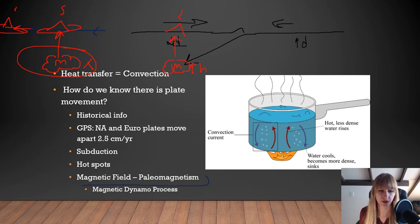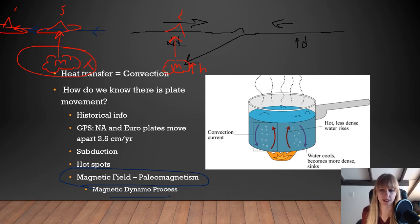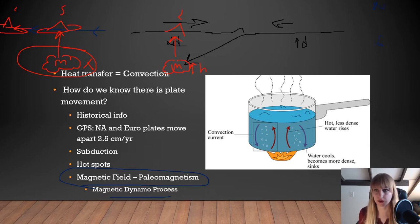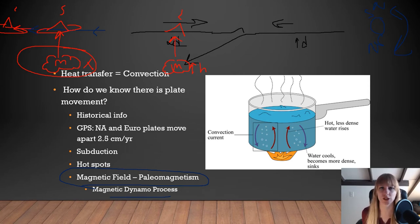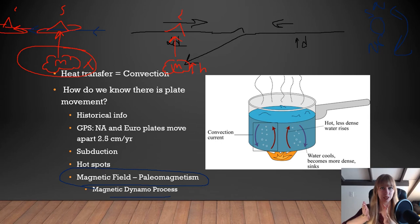The fifth line of evidence is paleomagnetism and the magnetic dynamo process. Magnetic north and south switch every few hundred thousand to millions of years, going from regular north/south to reversed polarity. We can see this in old layers of magmatic rock — as lava cooled, magnetic material aligned itself with north/south, recording Earth's magnetic field at that point of cooling, showing bands of normal and reverse polarity.